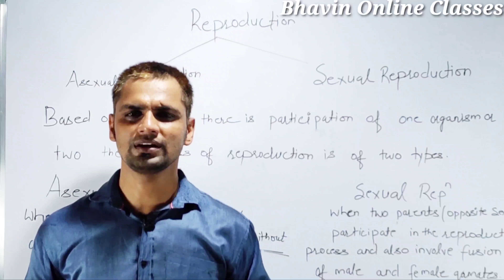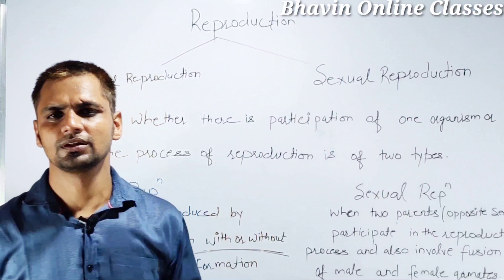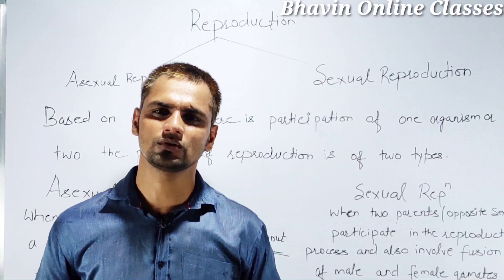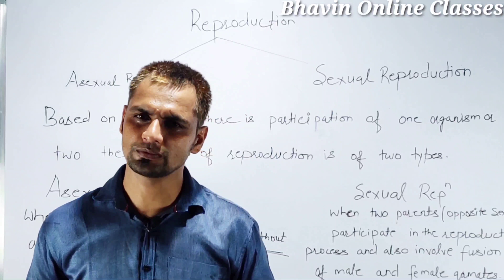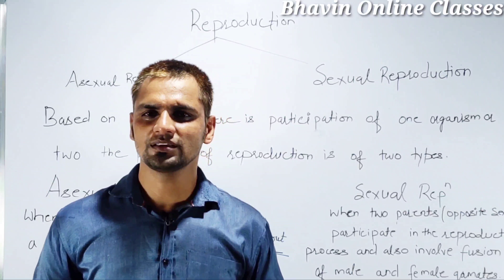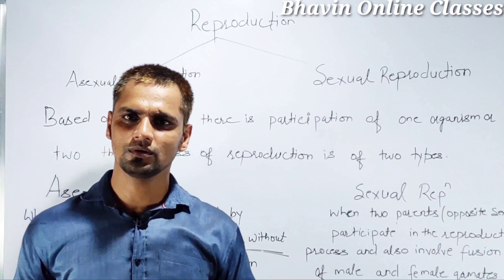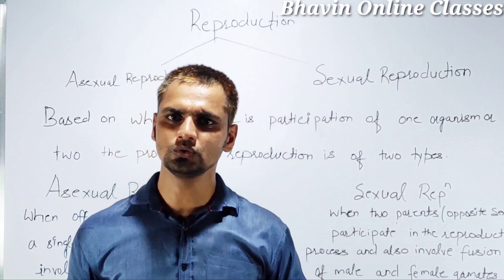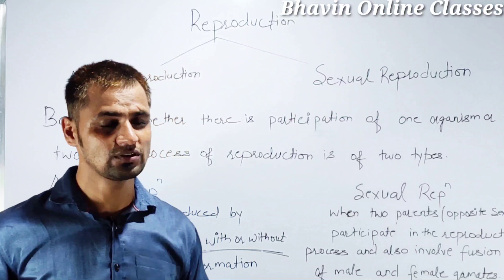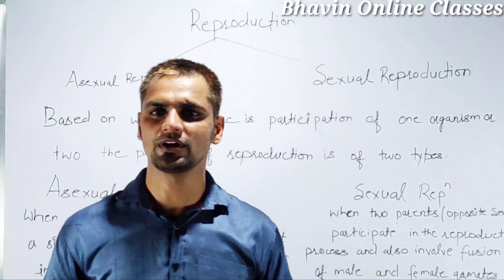Welcome to Bhavin Online Classes. Here we will discuss about the types of reproduction. Reproduction is a biological process by which organisms produce offspring similar to themselves. Based on whether the participation of one organism or two, the process of reproduction is of two types: asexual reproduction and sexual reproduction.